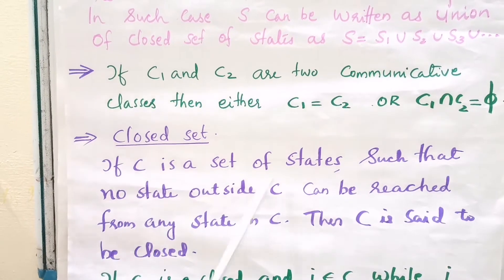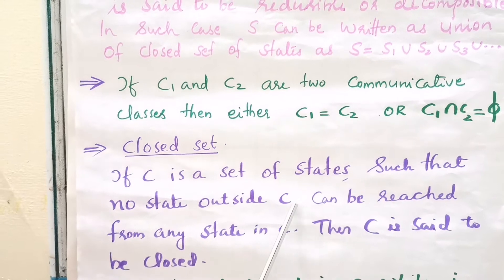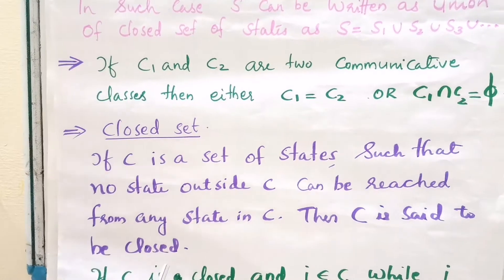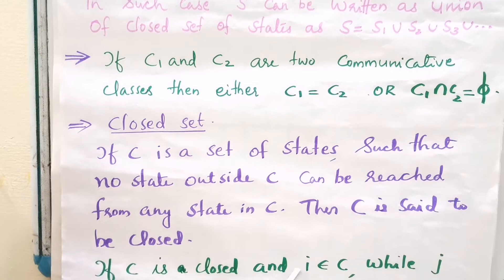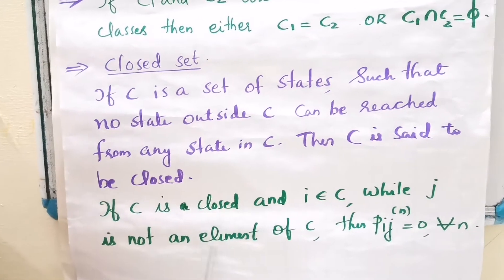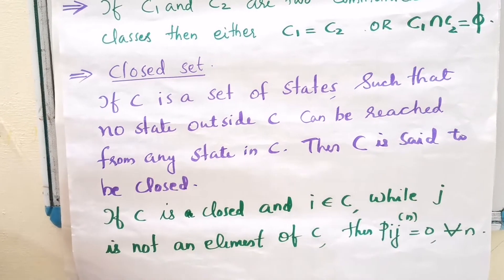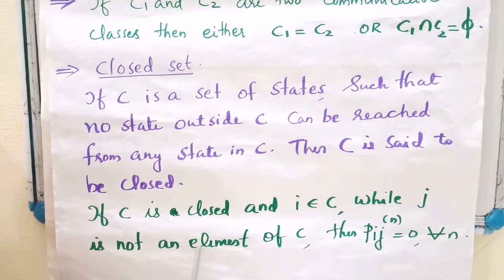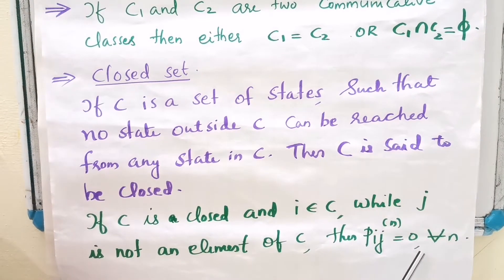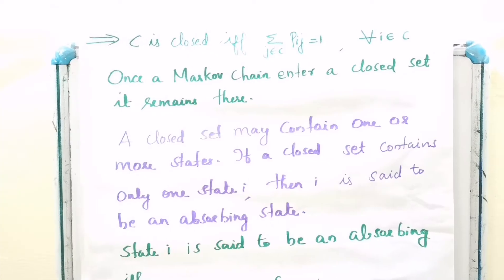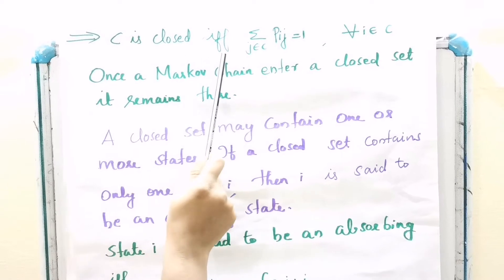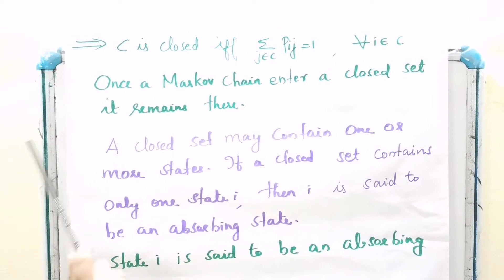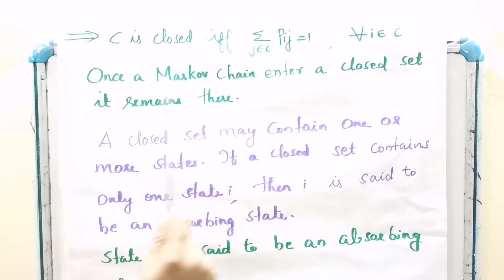If C is closed and i belongs to C, but j is not an element of C, then P_ij^(n) equals 0 for all n. Also, if C is closed and i belongs to C, then the sum of P_ij^(n) equals 1 for all i in C. Once a Markov chain enters a closed set, it remains there.